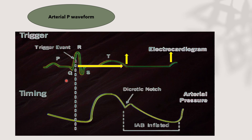However, if the R wave is not clear or we have arrhythmias and cannot rely on the ECG, we use the arterial pressure waveform, with the systolic upstroke as its trigger. Balloon inflation occurs immediately after the T wave on ECG, and just before the dicrotic notch on the arterial pressure waveform — reflecting the timing relationship between ECG and pressure.